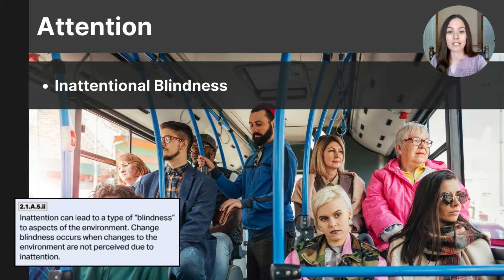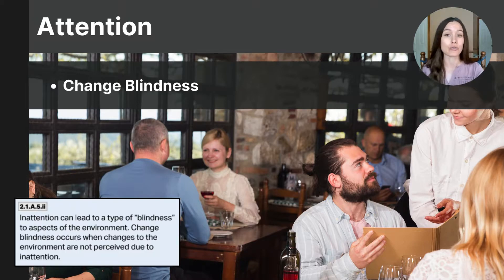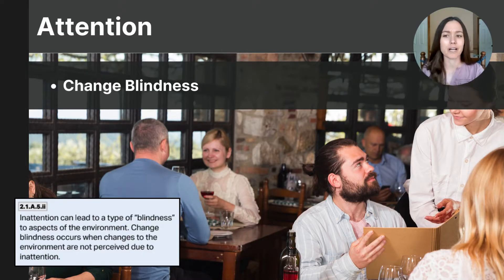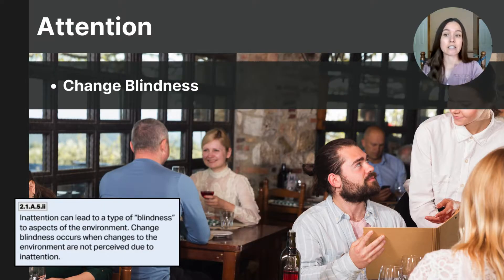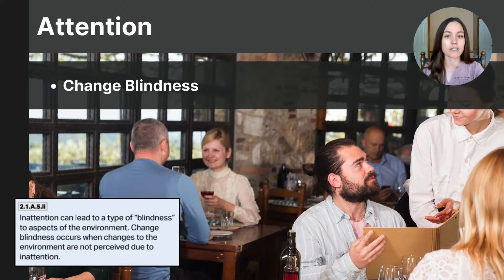A more specific form of inattentional blindness is called change blindness — when we fail to notice a change in our environment due to our inattention. For example, suppose a waitress comes to your table as you are reading the menu. Due to your selective focus on the menu, it's very likely you would not notice if a different waitress came back to take your order. If that waitress swap happens without your noticing, you've been affected by change blindness, because you were focused on determining your meal order rather than the details of your waitress.